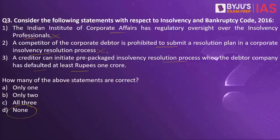The third statement reads: a creditor can initiate a prepackaged insolvency resolution process when the debtor company has defaulted at least 1 crore. It is speaking about 'at least.' When it is the least, the amount is not 1 crore but 10 lakhs. So all three statements are wrong, and as a result the answer is none.